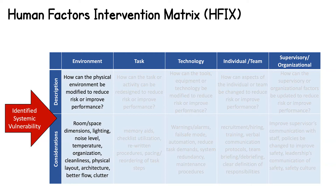The first HFIX category focuses on environmental factors and asks individuals to think about how the physical environment can be modified to reduce risk or improve performance. This could involve changing the room or space dimensions, improving lighting, changing the noise level, increasing or decreasing the temperature to make individuals more comfortable, organizing and cleaning the room, changing the way in which individuals stand in a given situation or scenario, and changing the layout or architecture of a given space.